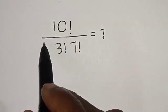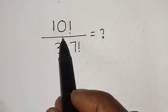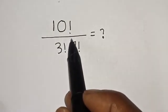10 factorial over 3 factorial 7 factorial is equal to what? We quickly want to simplify this factorial problem. Solution: